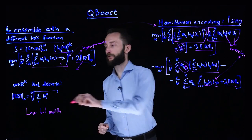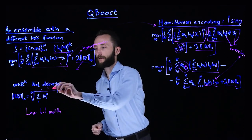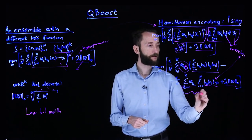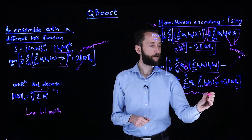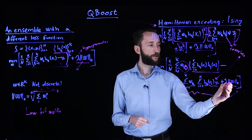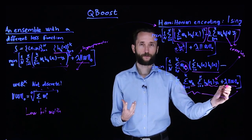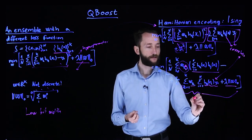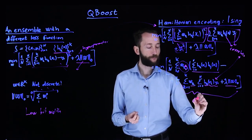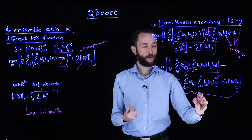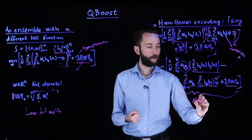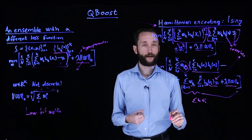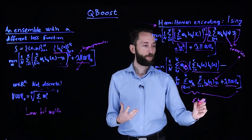So in the regularization term, we can get rid of this square root zero. It doesn't make any difference. So now if you look at this part, what you see here is that you have elements of the W vector weighted by some numbers. So this is the bias term in the Hamiltonian encoding in the Ising model. So this would correspond to the external magnetic field in the Ising model.